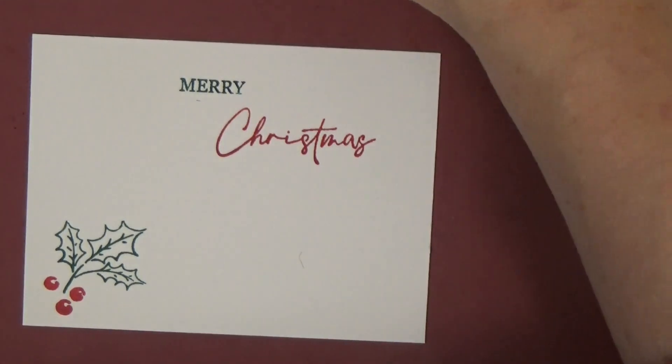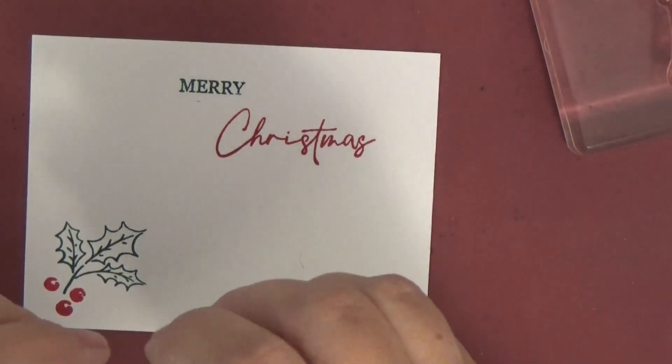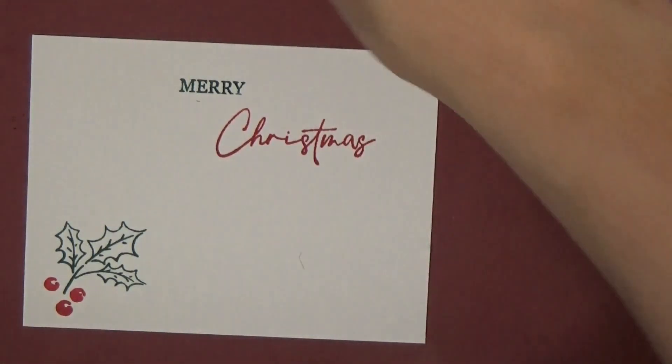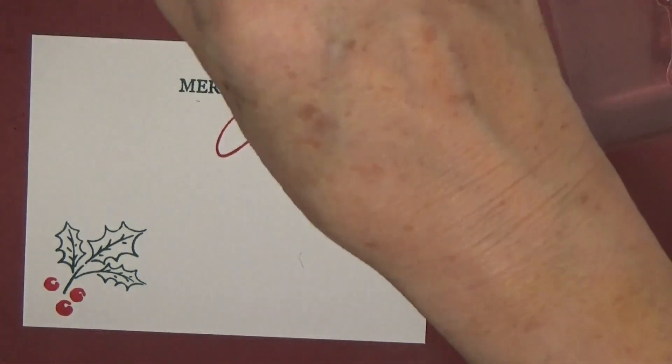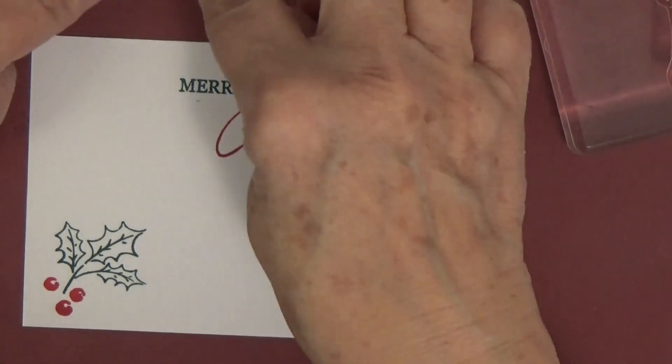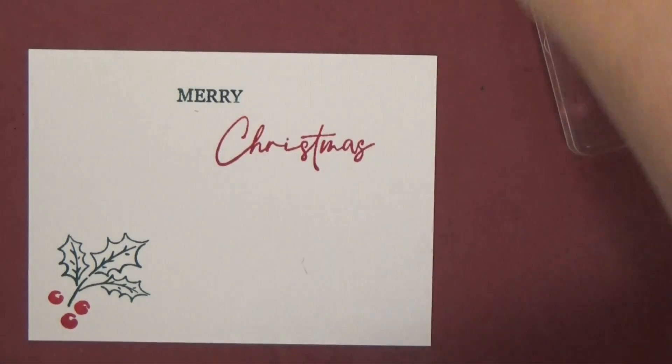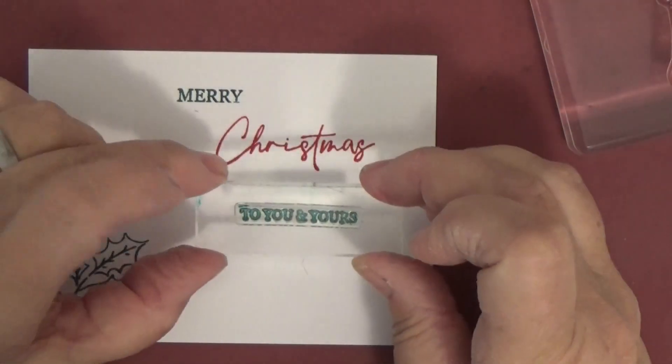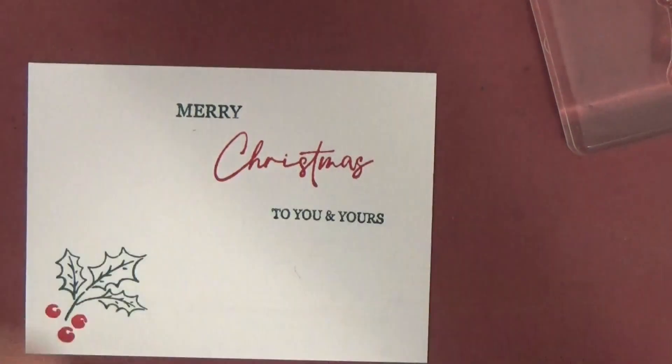So it says Merry Christmas. I'm going to take the Merry off so I can demonstrate this to you right now. You stick the acrylic block down and put the letters on it. Stamp it in the green and do to you and yours right here. And then you have a place to sign. So we let that dry a bit.